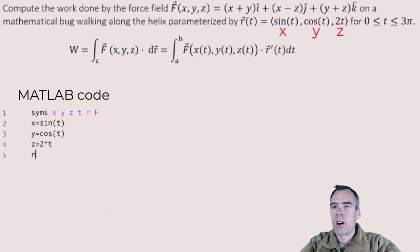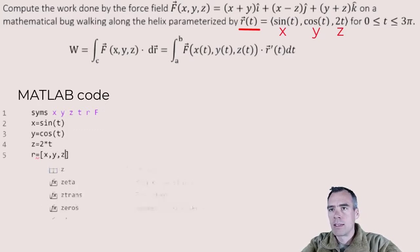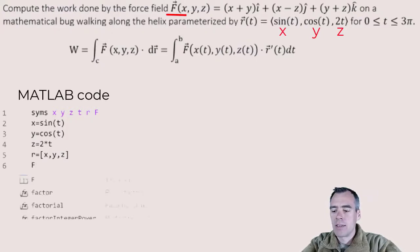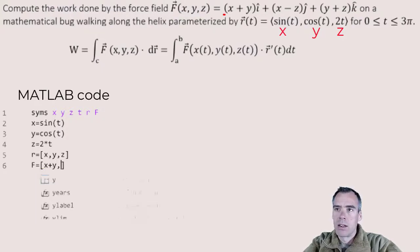And we can go ahead and define our R as our X, Y, and Z components in this vector. And we go ahead and define our F as given, where the I hat component was X plus Y. The J hat component was X minus Z. And our K hat component was Y plus Z.